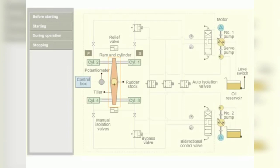Pressurized hydraulic oil is supplied to the cylinders. The tiller arm converts the linear motion of the rams into rotary motion of the rudder stock. Potentiometer senses the rudder stock position and sends feedback to control box.